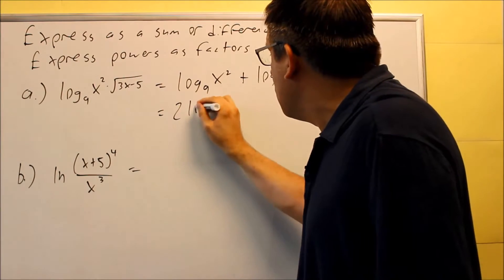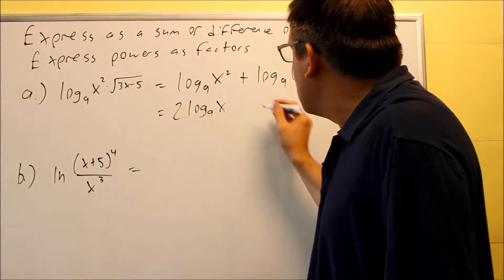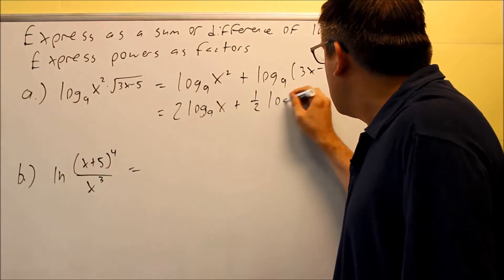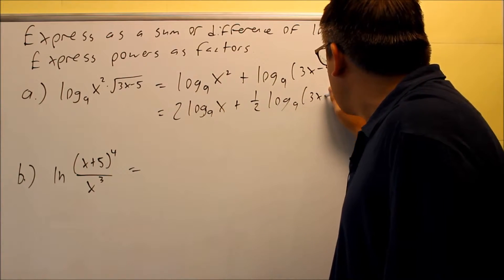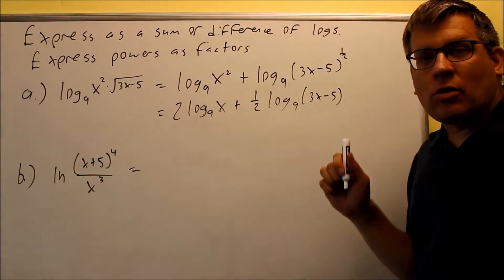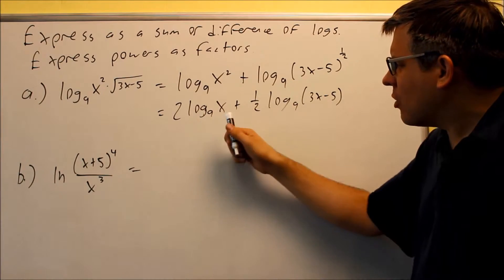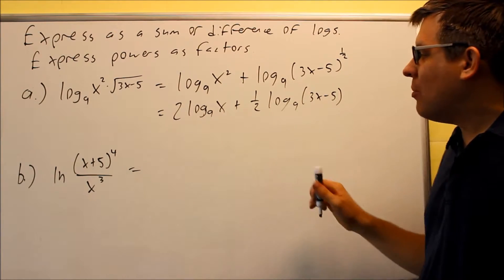So we're going to bring that down. We have two log nine of x plus one half log nine three x minus five. Okay, so that's what they mean by express powers as factors. It means that it's no longer a power, it's no longer an exponent. Now it's a factor, meaning that it's being multiplied by something.